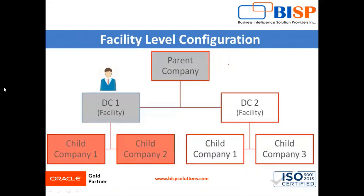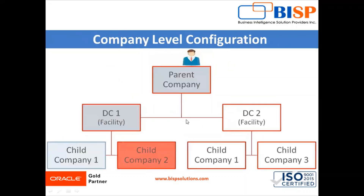Next is the facility level configuration. In this case the user is at the distribution center level. When we set up the configuration at the DC or company level, it will drive where those changes apply. If we make a change at the facility level — the distribution center level — it is going to affect both child companies. If we change a parameter for distribution center one, it will apply for child company one and child company two.